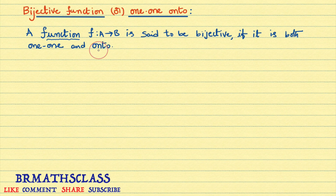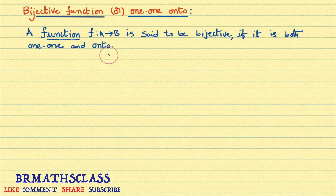In previous classes, we learned what is a 1-1 function and what is an onto function. If you want those classes, I will give the link in cards. You can find these videos in the rightmost corner with the i symbol. A function f from A to B is said to be bijective if it is both 1-1 and onto.